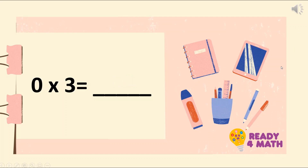What about 0 times 3? 0 times 3 is the same as 0 groups of 3. Therefore, the answer is 0. Note that any number, no matter how small or how big, when you multiply it by 0, the answer is always 0.